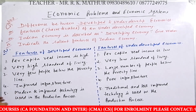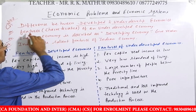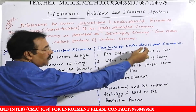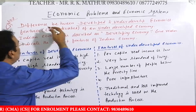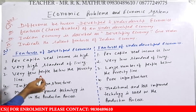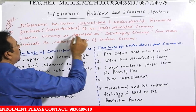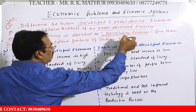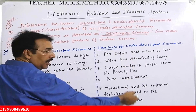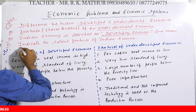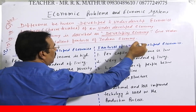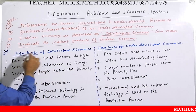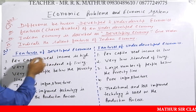अगर features पूछे तो सिर्फ underdeveloped का लिखना है, difference पूछे तो दोनों को दिखाना है। India की economy developing है — अगर 'indicate the salient features of Indian economy' पूछे तो उसमें क्या दिखाना है यह देखेंगे।